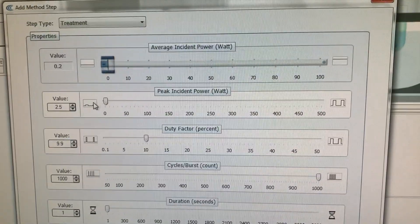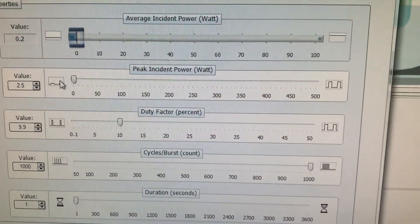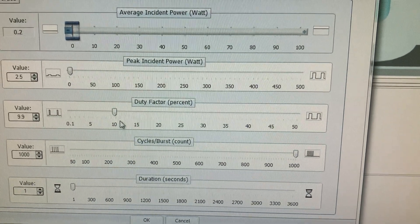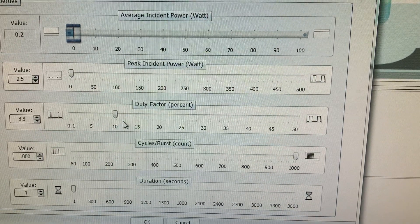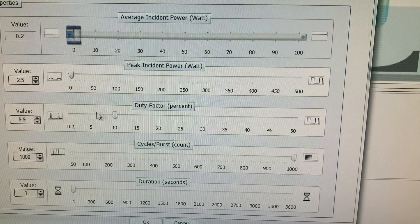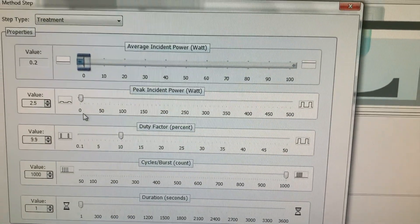You have to play with parameters such as the average incident power in watts, the peak incident power, the duty factor, the cycles or bursts that you are going for, and finally the duration. Of course, the longer, the smaller the fragments that you're going to get.